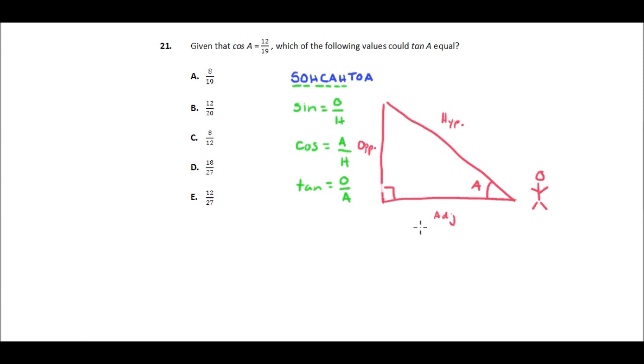So they're saying that the cosine of angle A is 12 over 19. So that means that the adjacent side, the side adjacent to us as we look, is 12, and the hypotenuse is 19.